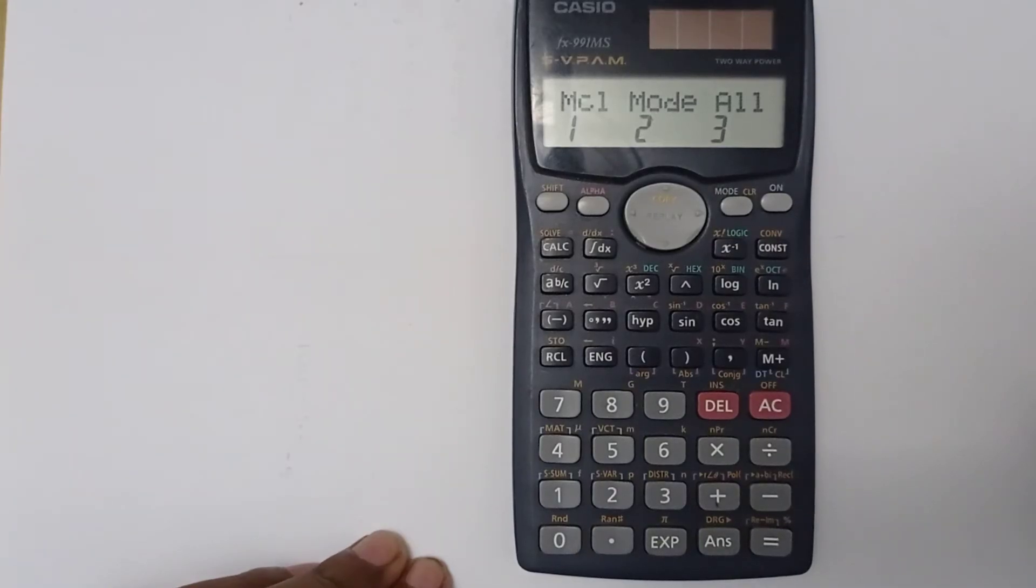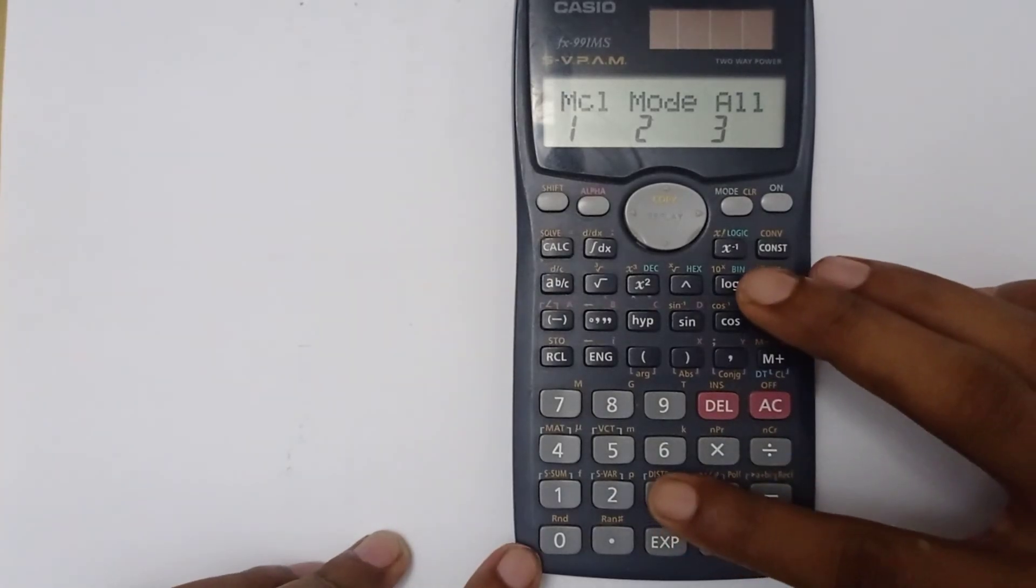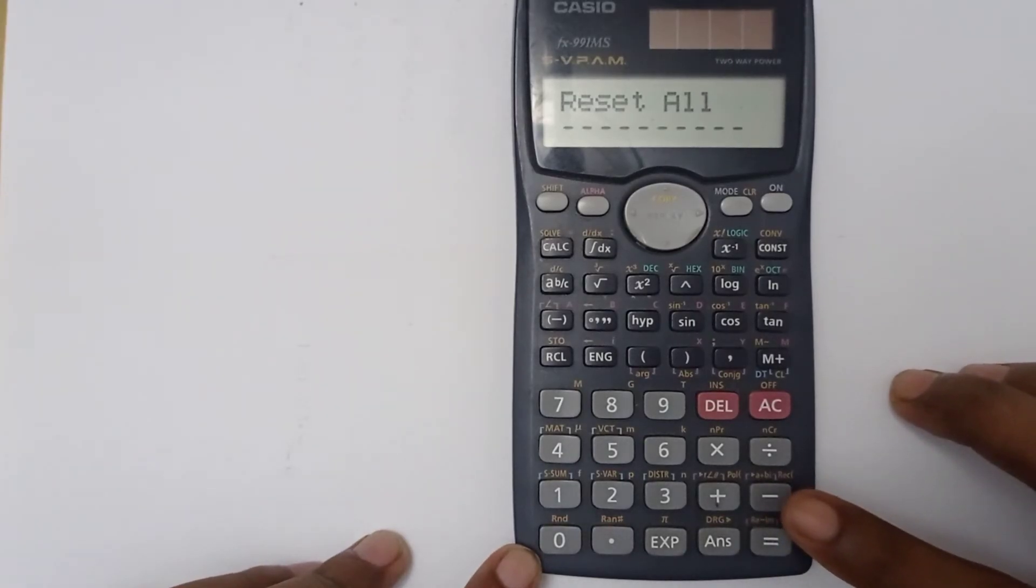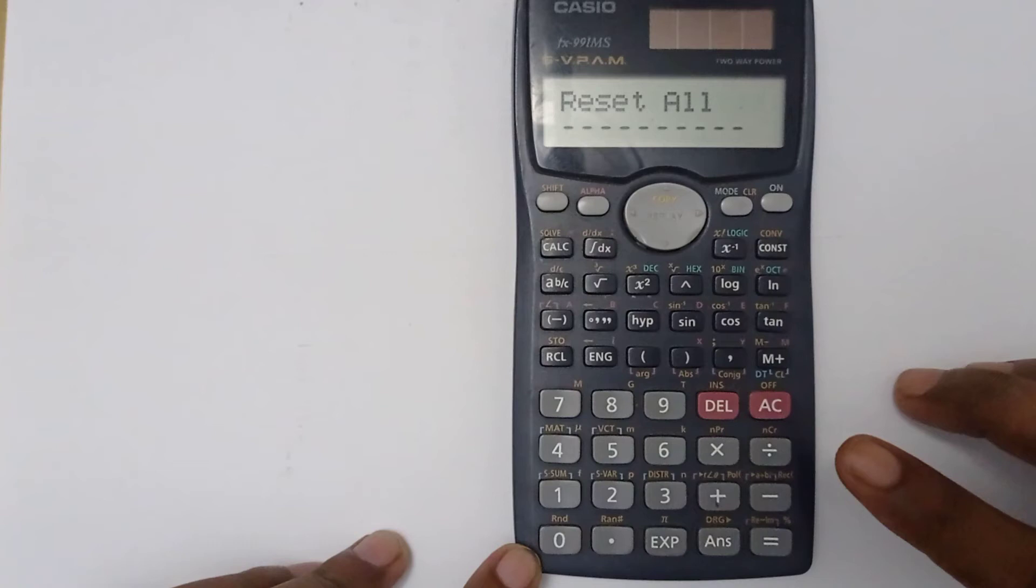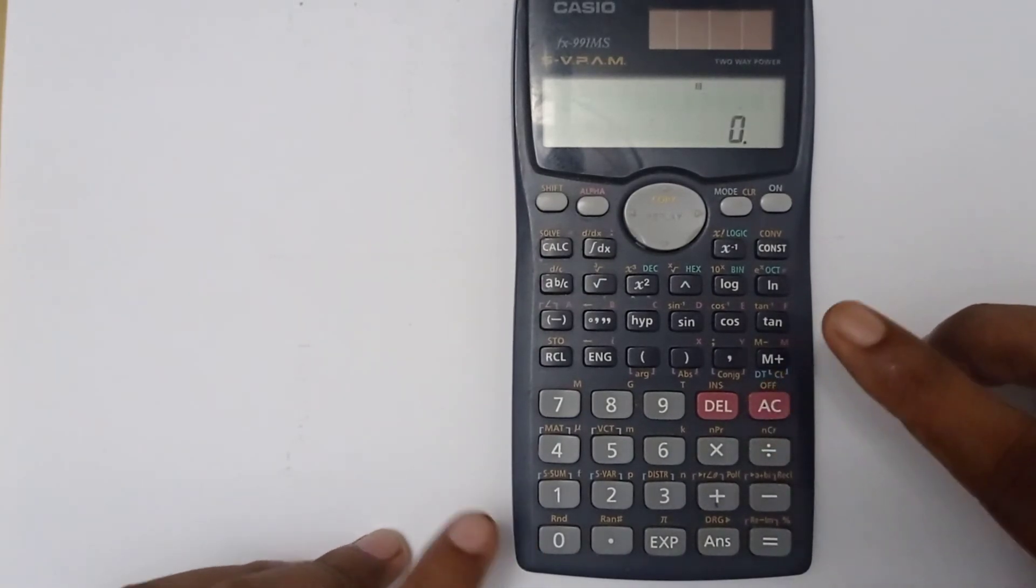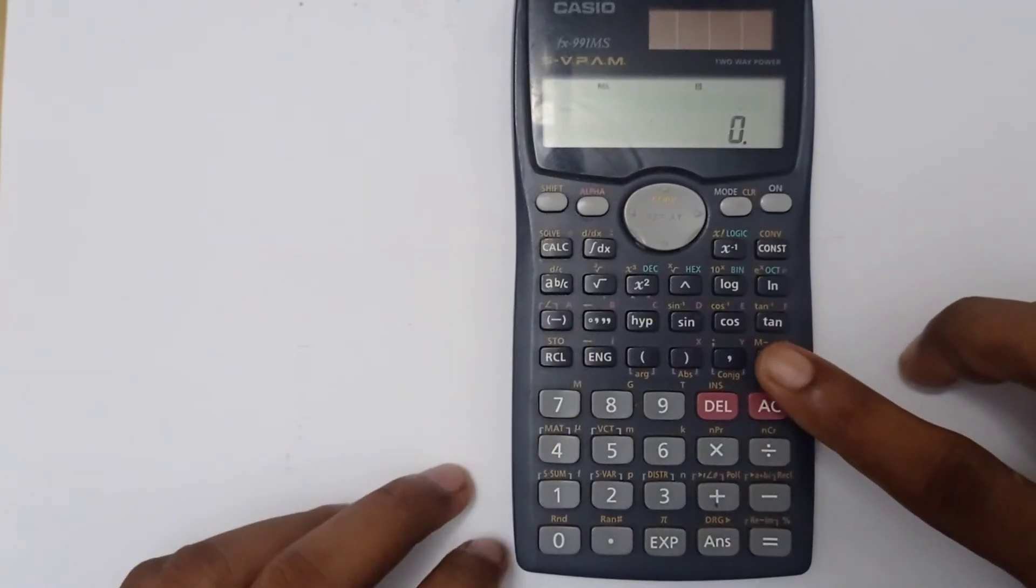I want to clear both my memory and previous settings, so I am pressing 3, and then press this equal sign. So the process is done. Now we call your memory, see there is nothing here.